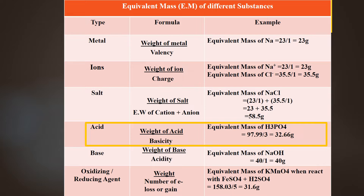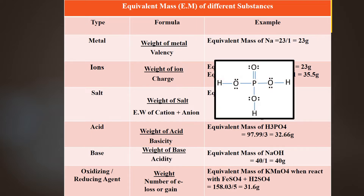For example, for finding equivalent mass of phosphoric acid, firstly find out its molecular weight, which is 97.99 grams per mole. Then draw the structure of phosphoric acid and find out replaceable hydrogen ions in it. As there are three replaceable hydrogen ions in it, so the basicity of phosphoric acid is 3. Now divide 97.99 by 3, so the equivalent mass of phosphoric acid is 32.66 grams.